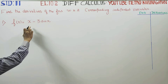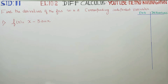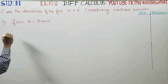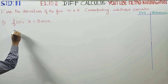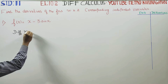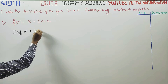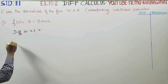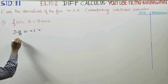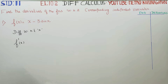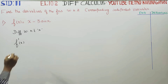We are going to differentiate this with respect to X. X is the independent variable. This is the differentiation symbol, the dash. F dash is the differentiation of the function.